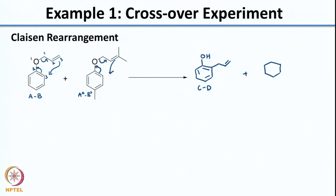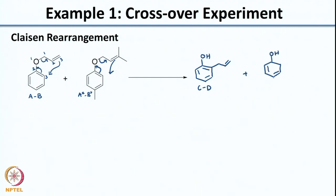For the A*B* system, you have a new bond forming, these pi electrons migrating, and this sigma bond breaking. The product you get is C*D*.